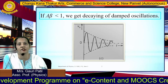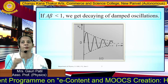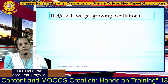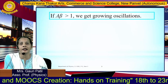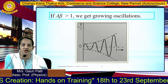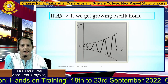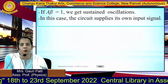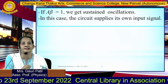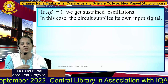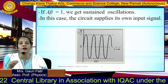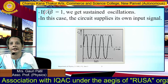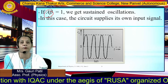If the loop gain A·beta is less than 1, we get a decaying oscillation, called a damped oscillation. If the loop gain is greater than 1, we get a growing oscillation — the amplitude increases. But if the loop gain equals 1, we get sustained oscillation, meaning continuous oscillations. These are the oscillations that depend upon the A·beta loop gain value.